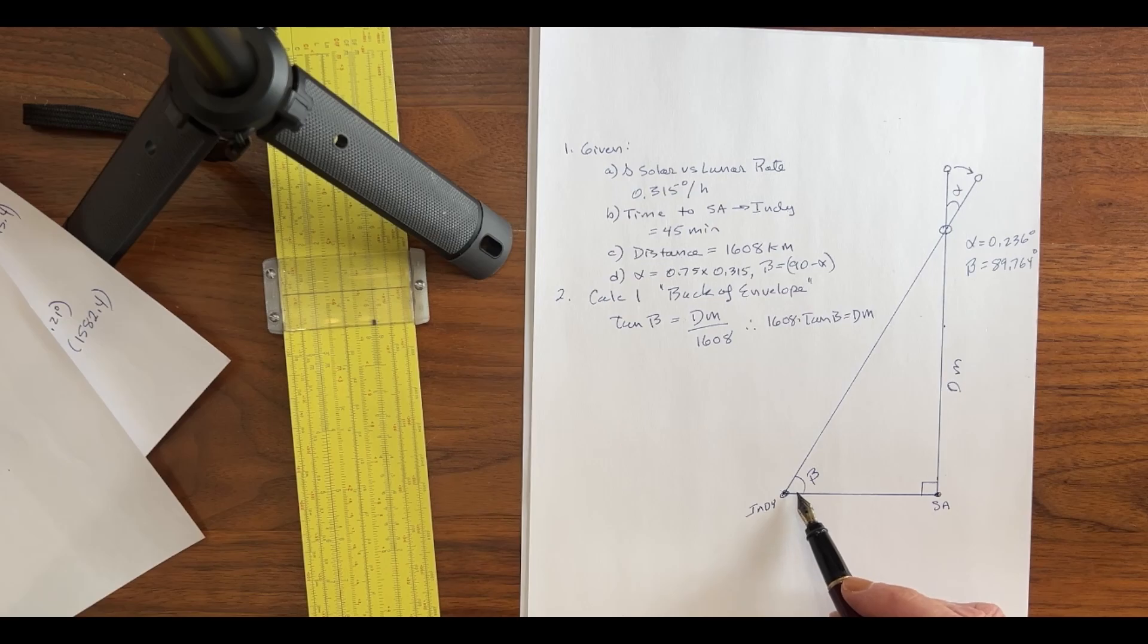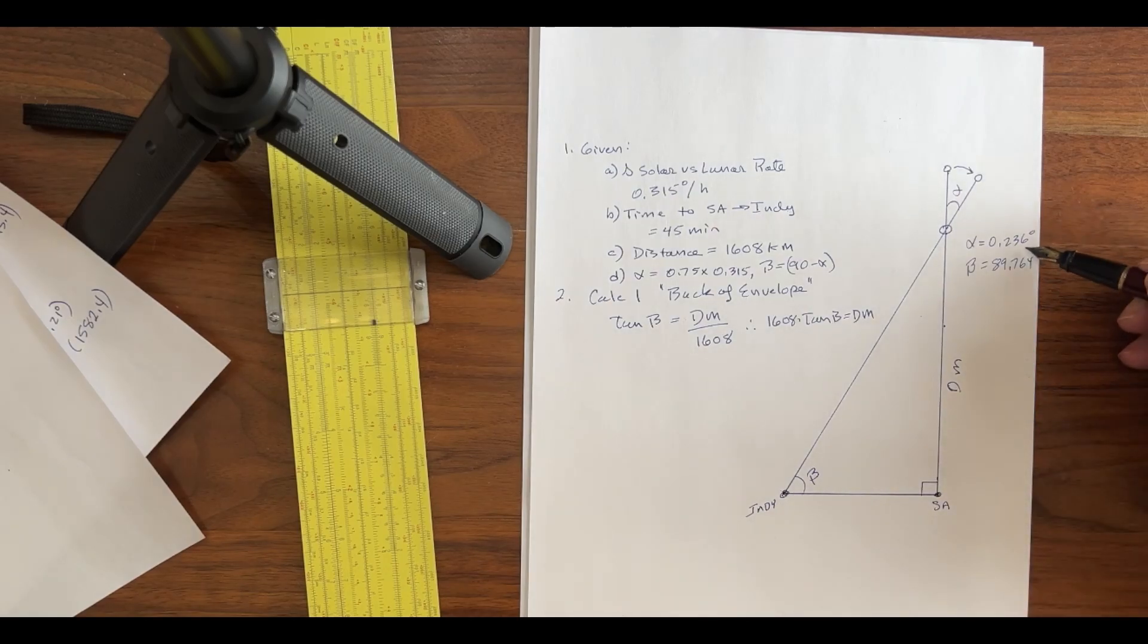The angle here at Indianapolis is going to be 90 degrees minus 0.236 degrees. So, it's going to be 89.764 degrees. Now, given that information, I'm going to do three different determinations of the distance from the Earth to the Moon. The first is going to be a back-of-the-envelope calculation. Then, we're going to take into account something we forgot to do. And then, we're going to do it right.